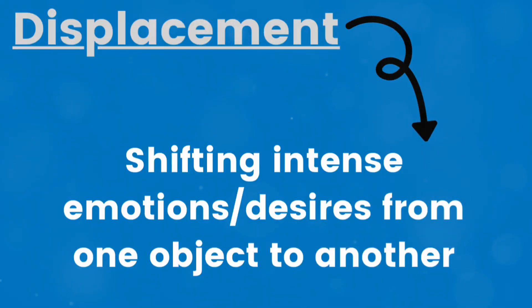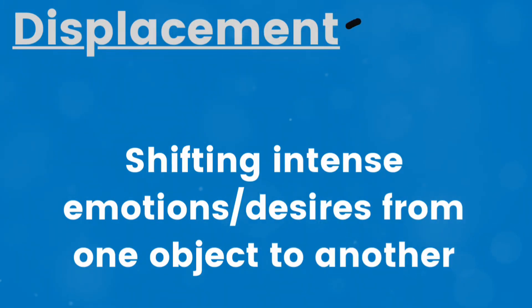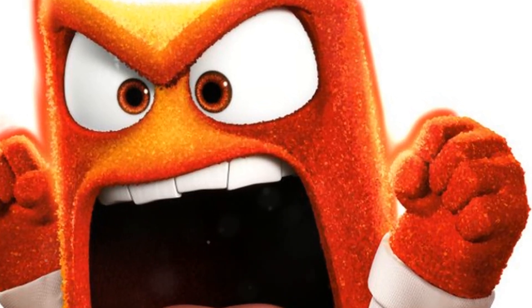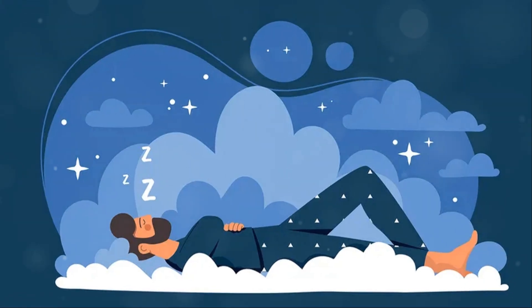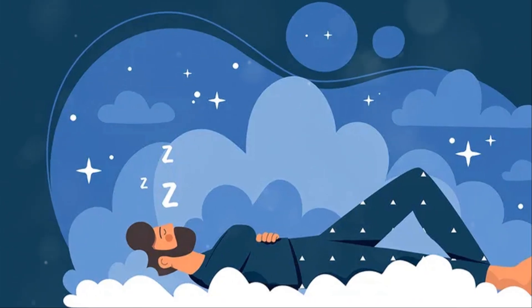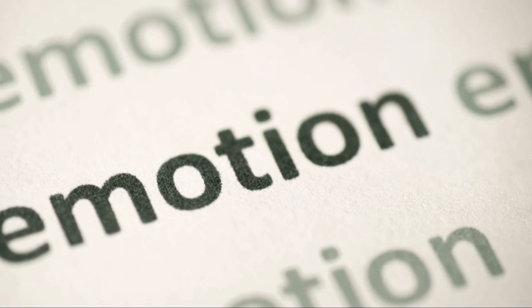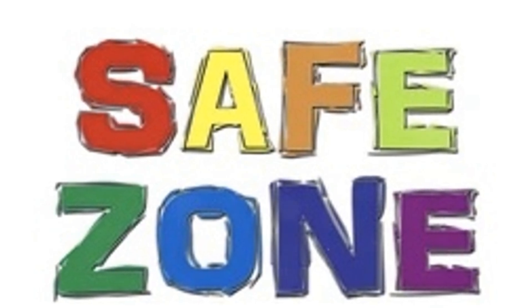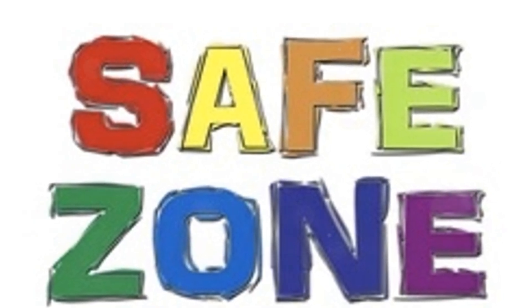Displacement. In displacement, intense emotions or desires are shifted from one object or person to another. For example, if someone is angry with their boss, they might dream of having an argument with a friend instead. This shift disguises the true source of emotion, making it safer for the dreamer to experience.